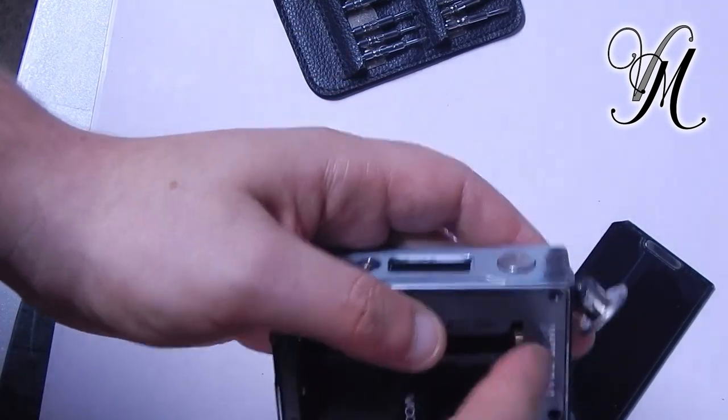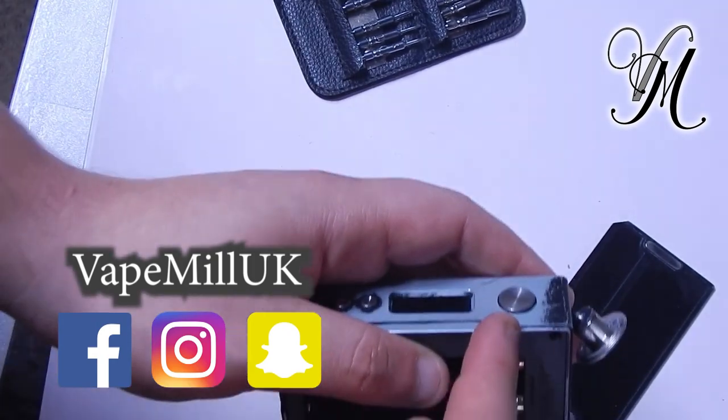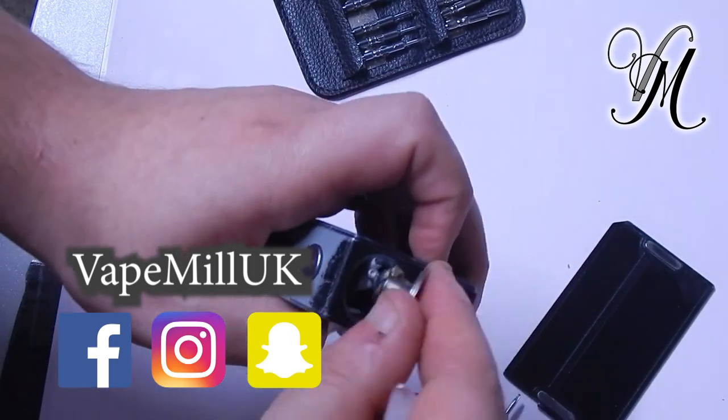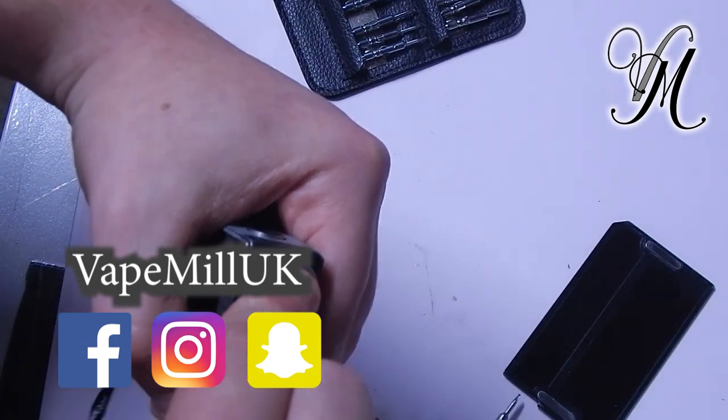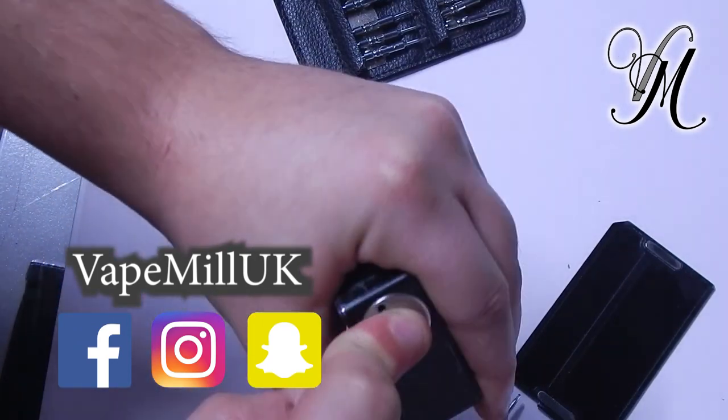The reason that you need the paper is because if you push the mod part back into the case, it'll just push the rubber off. Then obviously be very gentle with this not to disconnect the wires. Get it back in place.